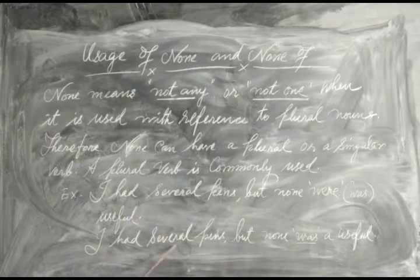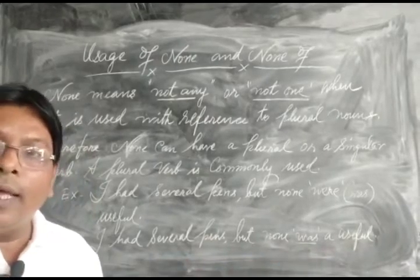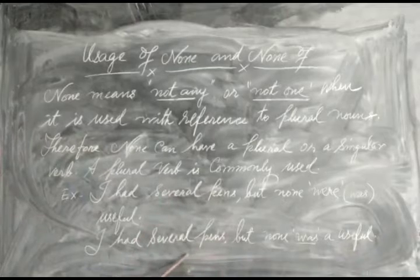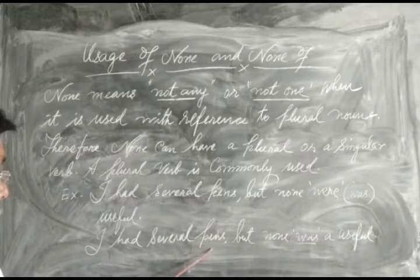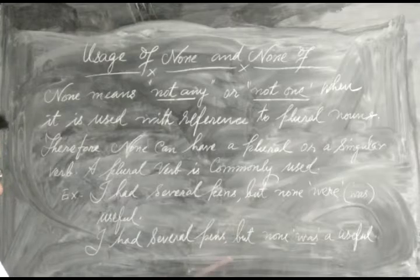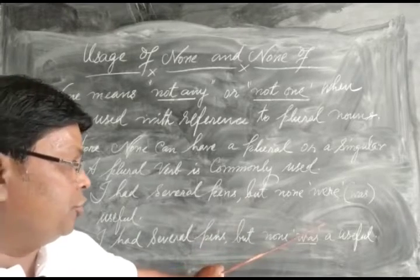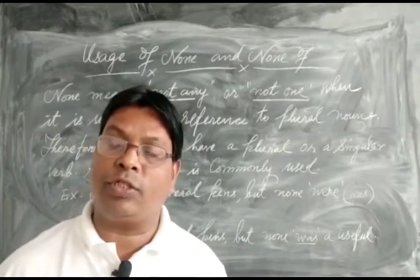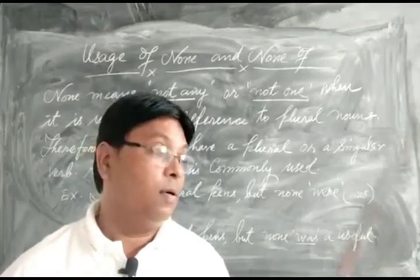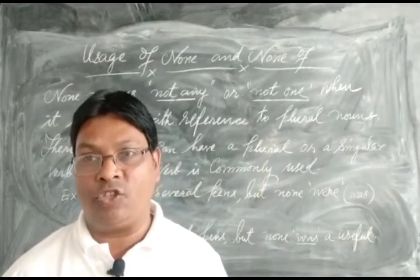The second sentence: 'I had several pens but none was useful.' Here the reference is given to a singular understanding — each individual pen — so the singular verb 'was' is used. But nothing is wrong with either form; we can use a singular verb or a plural verb. It depends upon our understanding.